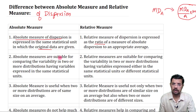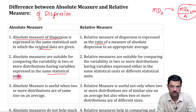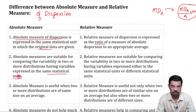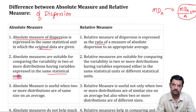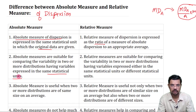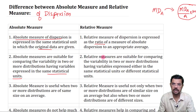Absolute measures are suitable for comparing variability in two or more distributions having variables expressed in the same statistical units. But if distributions have different units, we make use of relative measures expressed as percentages. By multiplying by 100, relative measures become percentages and can be used to compare two different quantities expressed in different units.